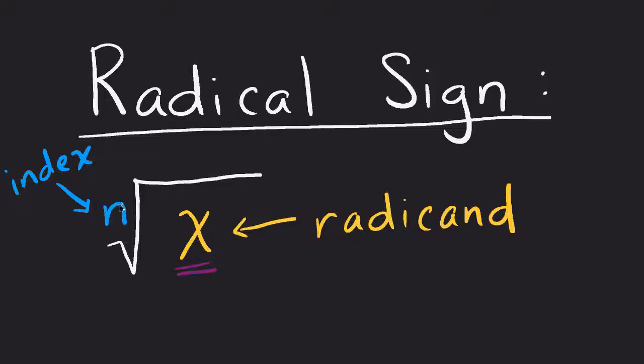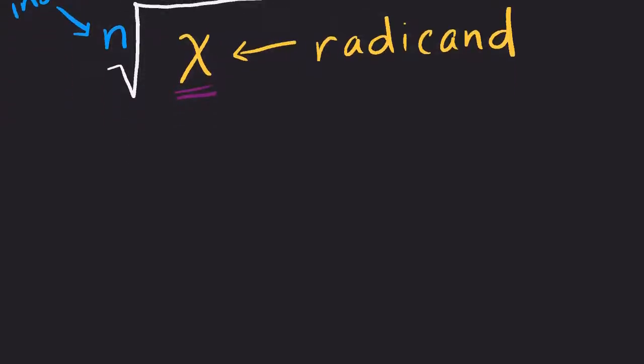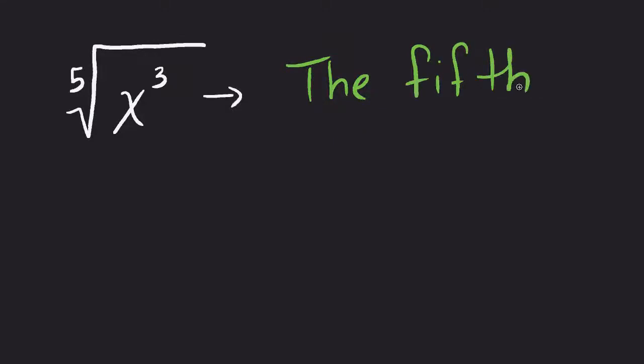Let's give you an example of what this looks like to read, then maybe we'll give an example of how to solve or simplify a problem like this. If I gave you something like this, my radical sign, my index number is 5, and my radicand is x cubed. If I was going to read this, I would say the fifth root of x cubed.